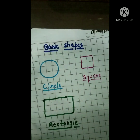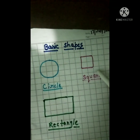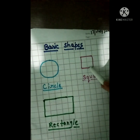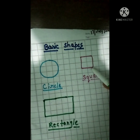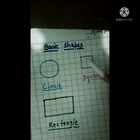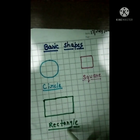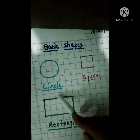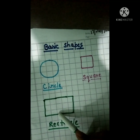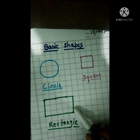Square and rectangle — what is the difference? Square and rectangle both have four corners. In a square, all four sides are the same. But in a rectangle, the upper and lower are equal, and the right and left are equal.